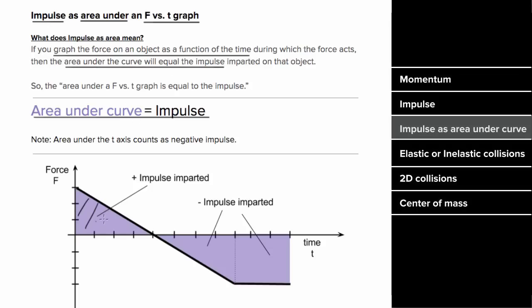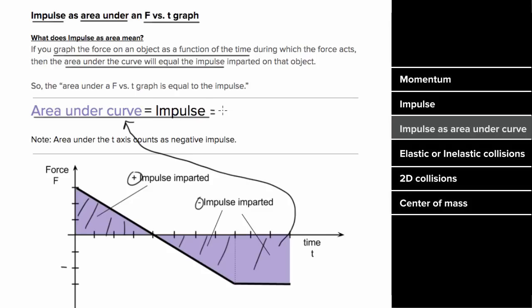Be careful: area above the time axis counts as positive impulse, and area underneath the time axis counts as negative impulse, since those forces would be negative. If we can find the area, that equals the impulse, and if that's the net impulse on an object, it also equals the change in momentum, which means we can figure out the change in velocity.